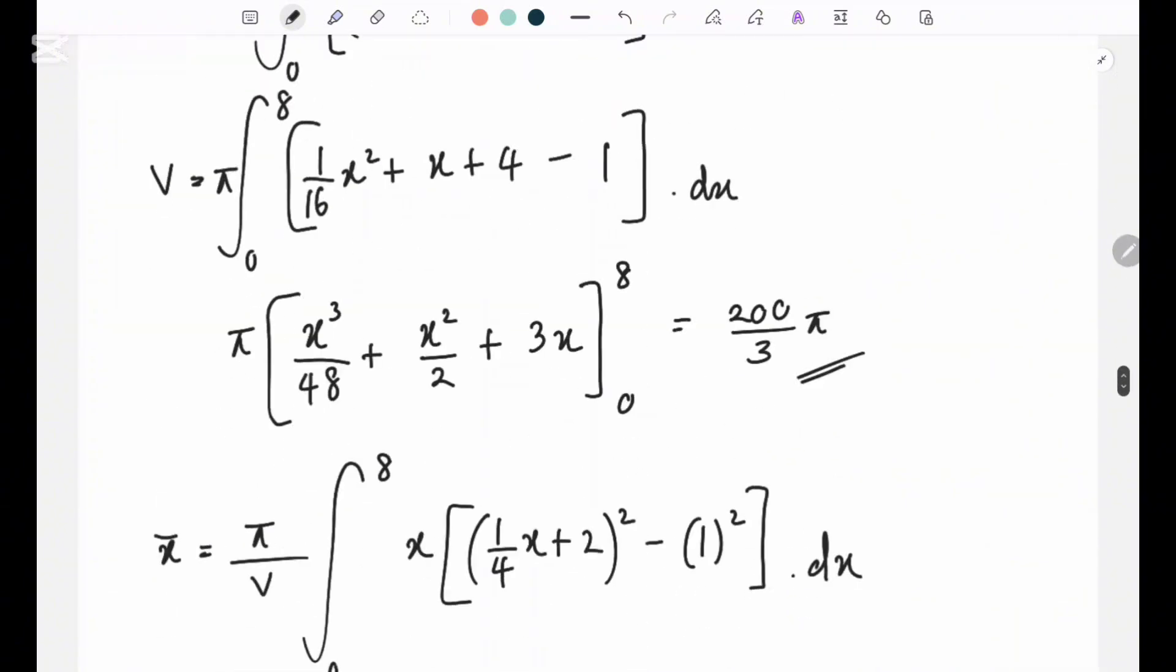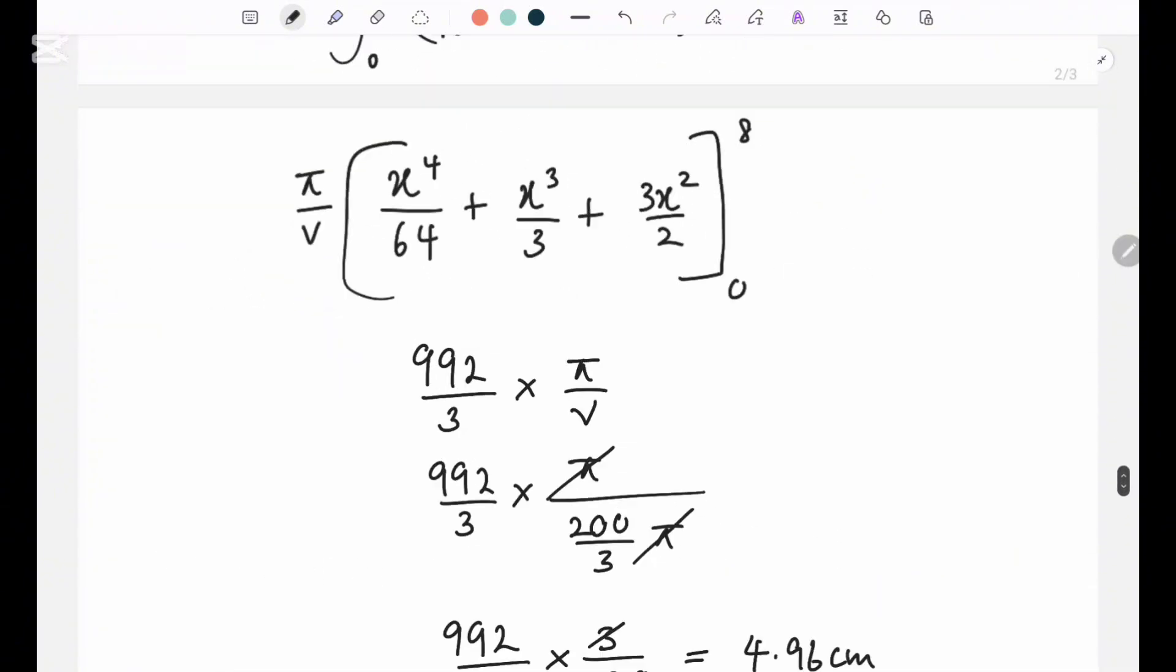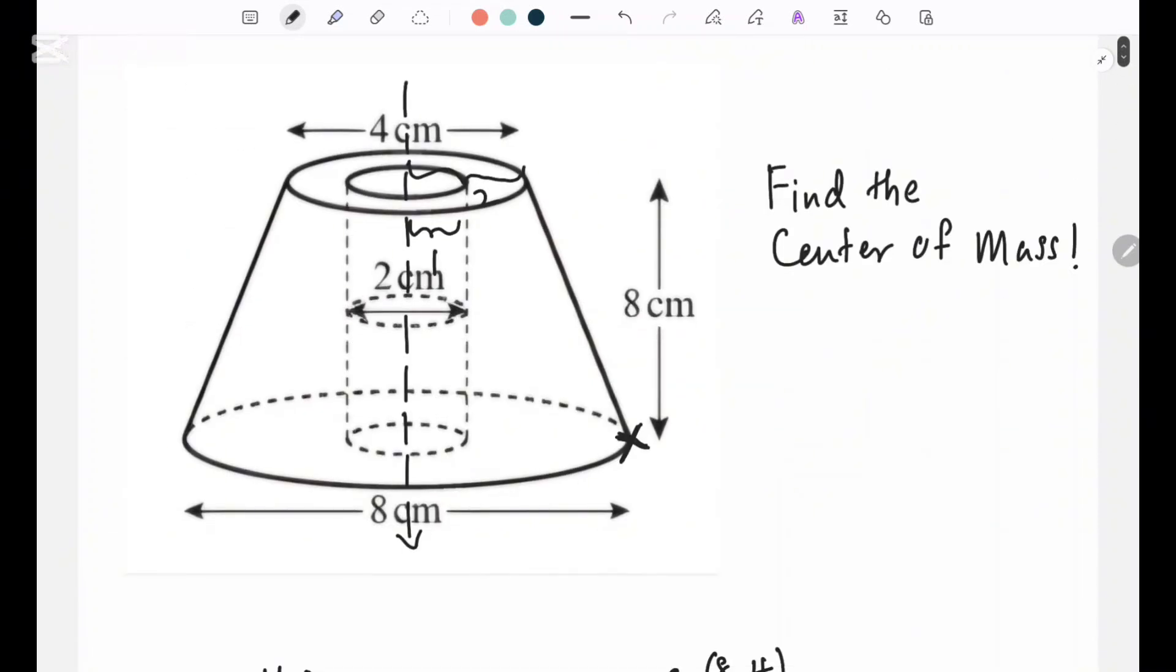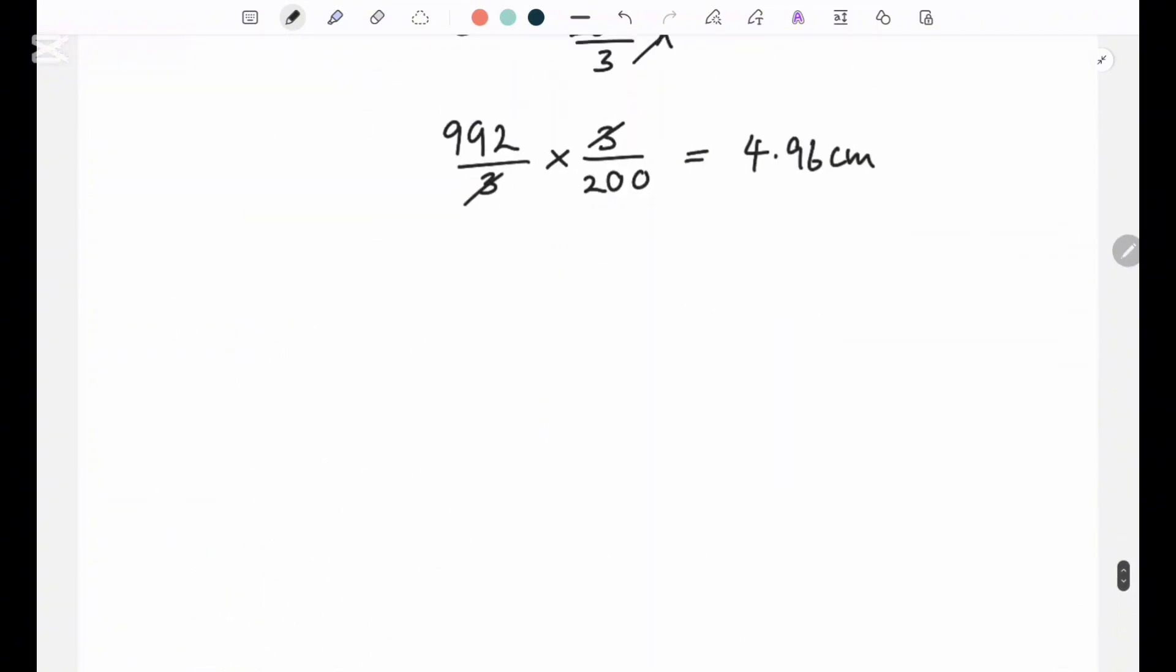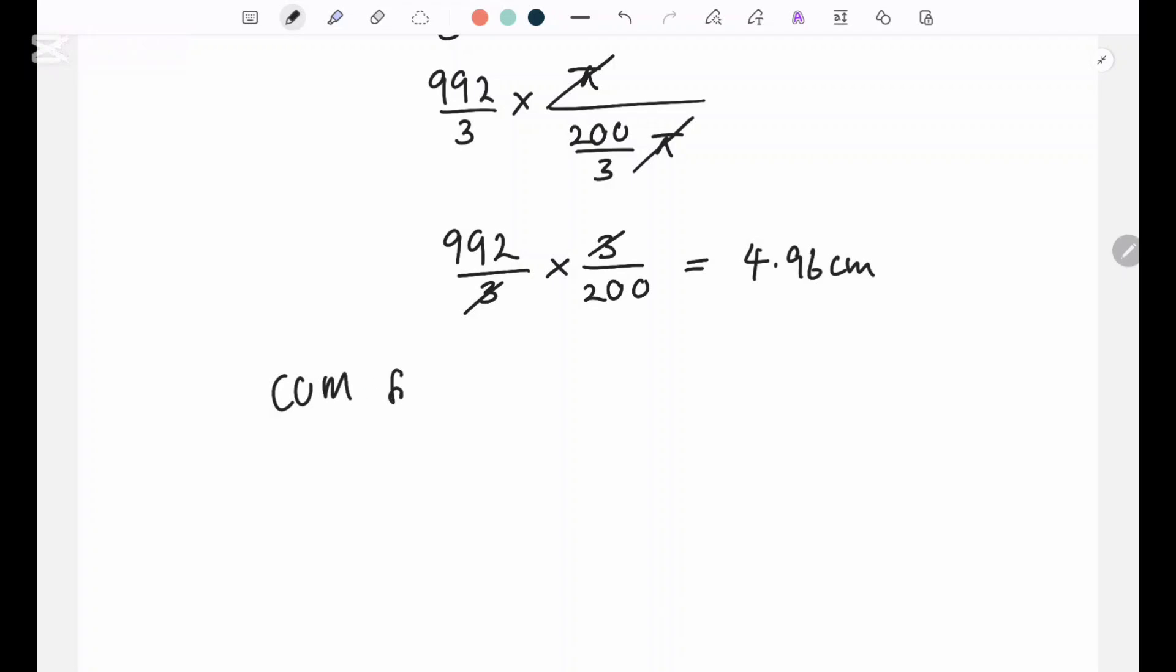So if you look at the diagram, the center of mass we got would be from this point, like from here to some point over there. It's 4.96. So if they ask you the center of mass, let's say they ask you center of mass from the base, what would that be? It would just be 8 minus 4.96. 8 is the total height, so you just subtract it and that gives you 3.04 centimeters from the base.